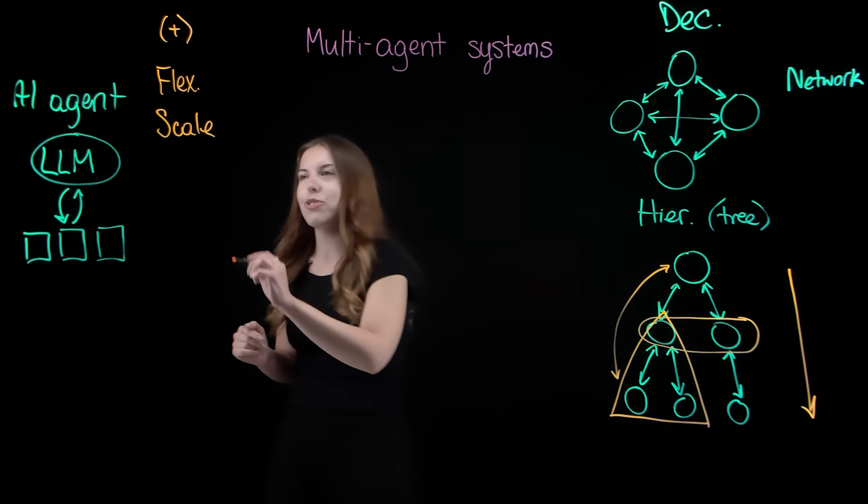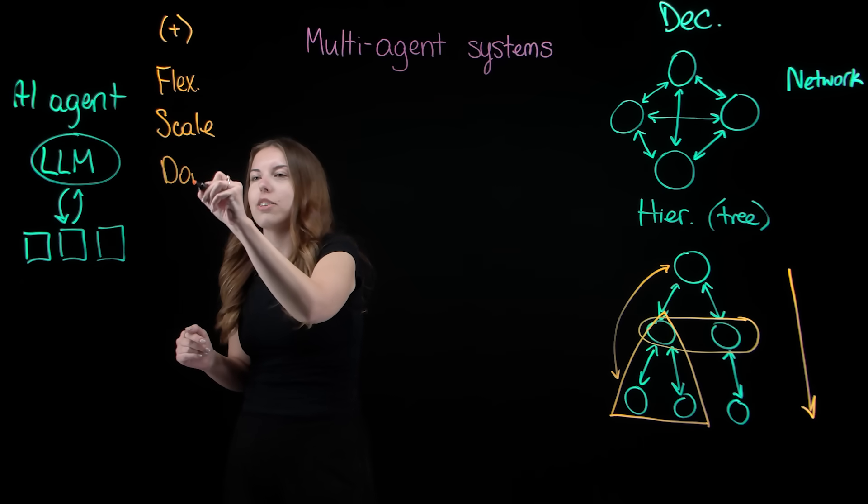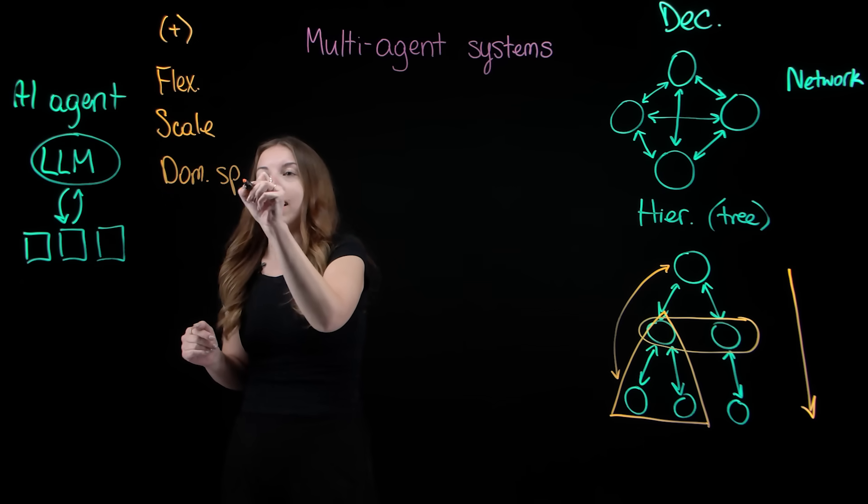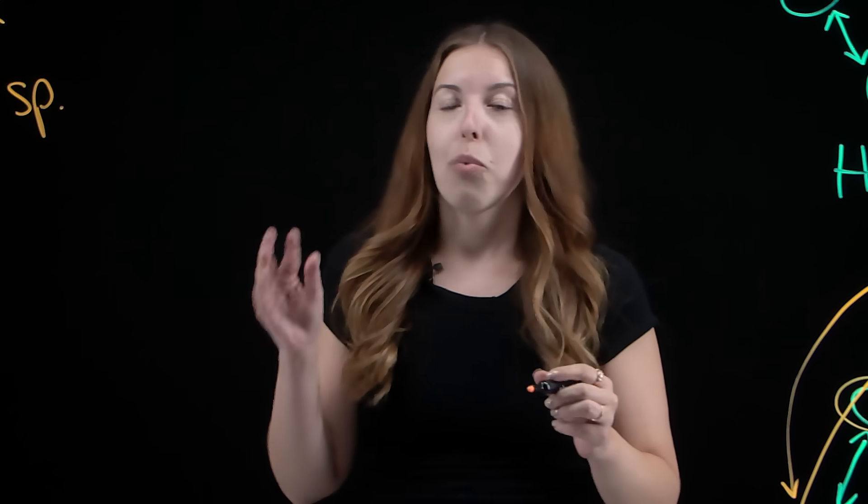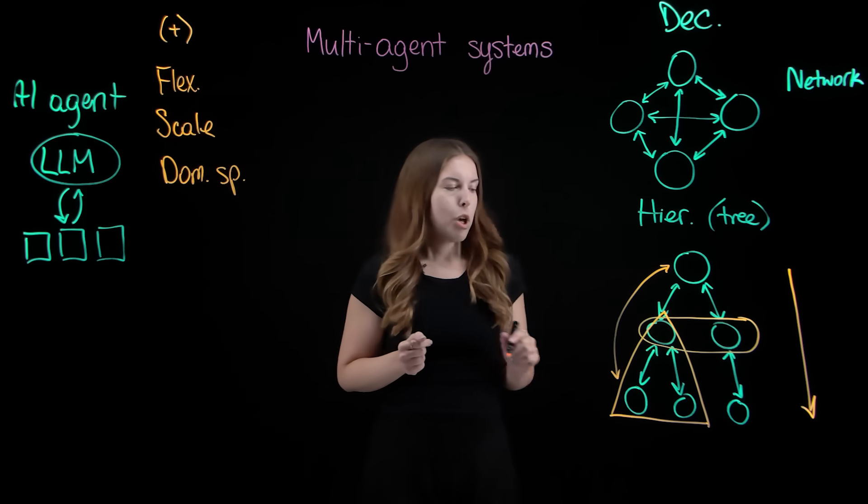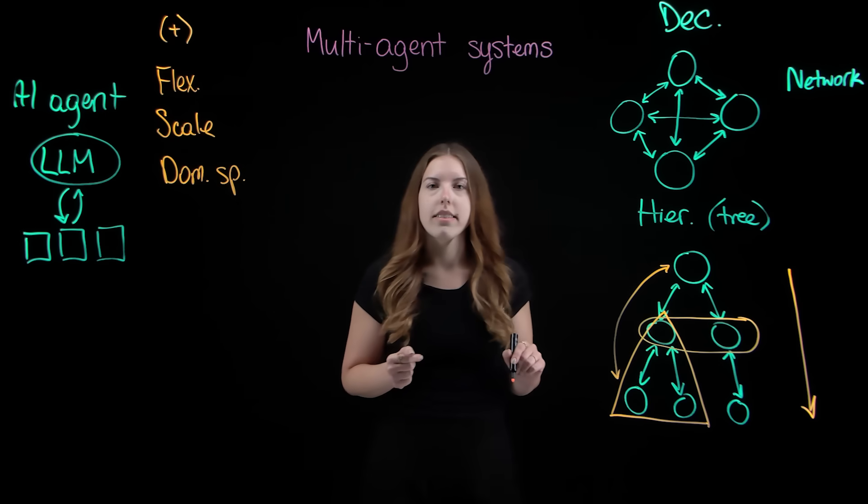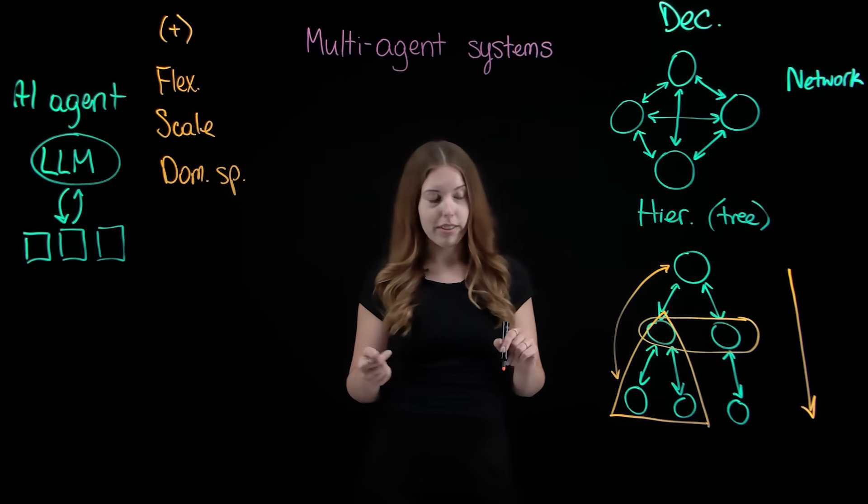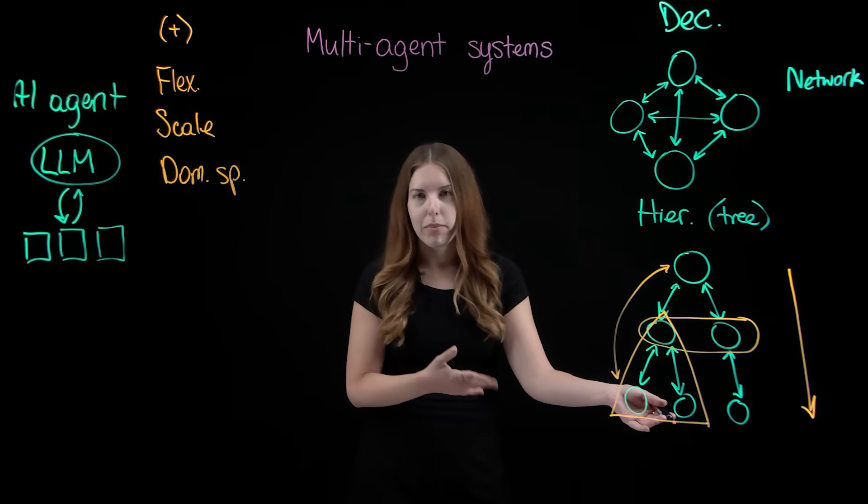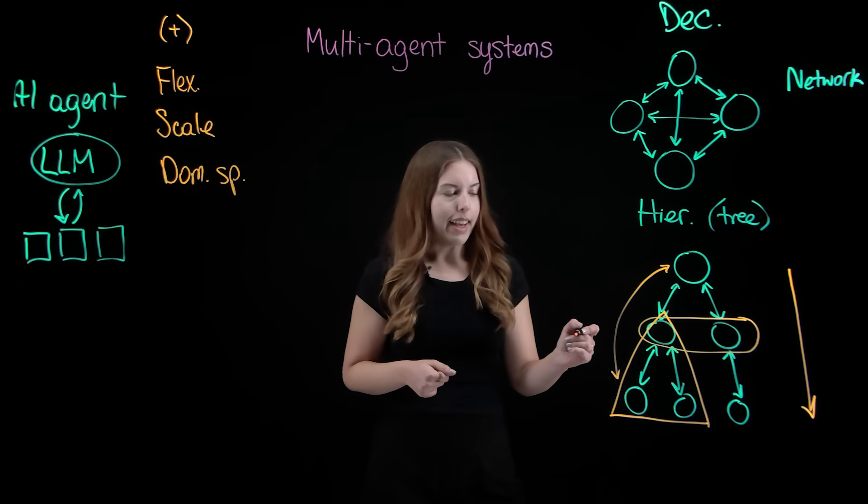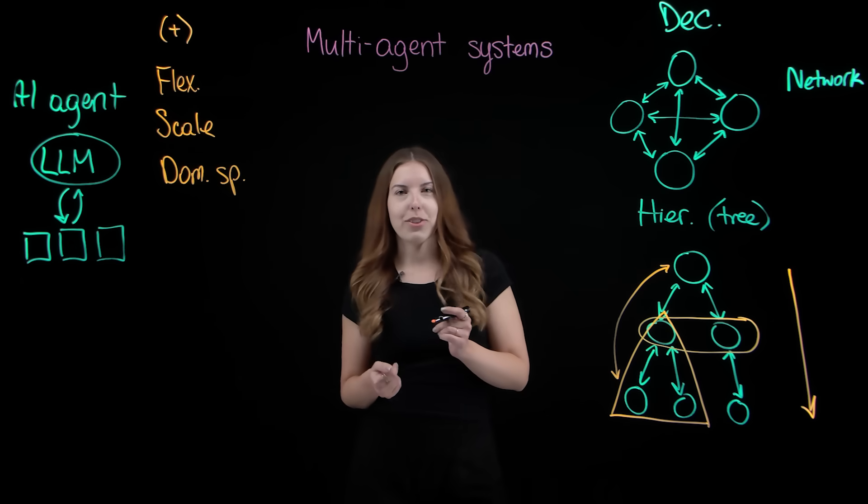These systems also encourage domain specialization. In a single-agent structure, one agent performs tasks in various domains. Whereas each agent in a multi-agent system can hold specific domain expertise, perhaps one agent specializes in synthesizing research papers, the other performs complex calculations, and another specializes in web search via an API.